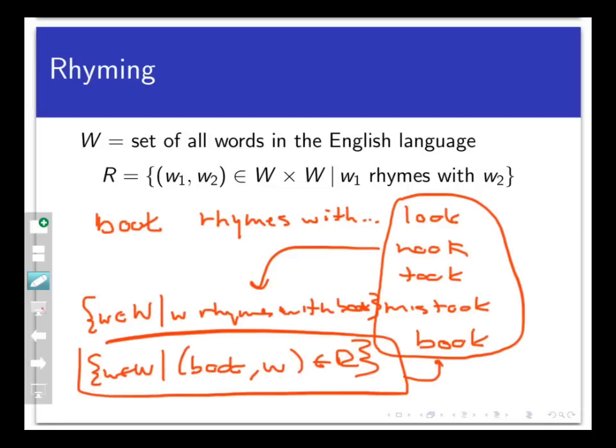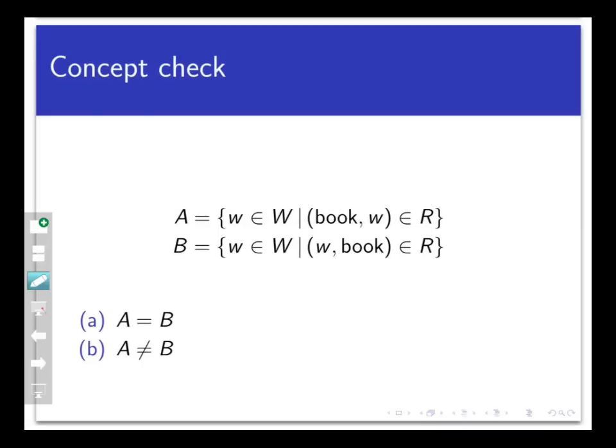Now, before we move to the main idea here, here's a quick concept check. Look at these two sets A and B, and the only difference here is the ordering of the pairs in the sets. Then which of the following is true? Is A equal to B, or is A not equal to B? So think about your answer, and especially think about why your answer is correct.